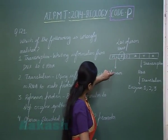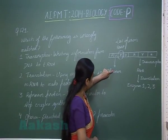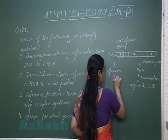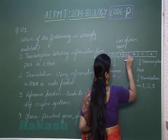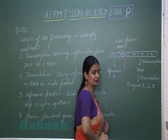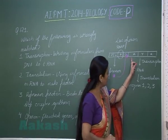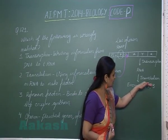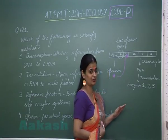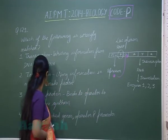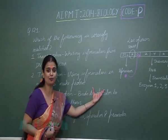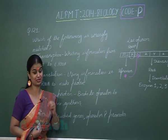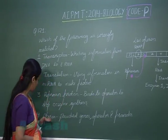Now, the repressor protein has the ability to join with the operator. If the repressor protein joins with the operator, then RNA polymerase cannot move further, and the synthesis of enzymes is inhibited. So if the repressor binds to the operator, it stops enzyme synthesis. This option is again correct.